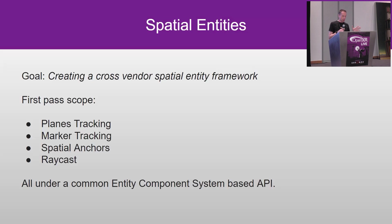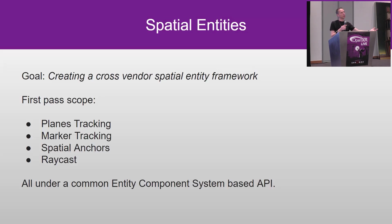For spatial entities, what we're trying to do is unify plane tracking, marker tracking — things like QR codes — spatial anchors, and a raycast extension into an EXT framework. This is a first pass; there are many more things like object tracking that will follow. But this lays the foundation of a common entity component system framework that allows you to query what's in your environment. Given all the planes in a sphere of 10 meters around you, those will be returned. You can use query terms and place anchors, and no longer need to deal with the Magic Leap version or the Quest version — it's just a Khronos EXT version. If it proves to be a good extension, we'll take it to core as well down the road. We're really proud of this work; it's a lot of work but it's coming — hopefully next year.